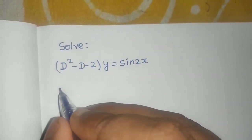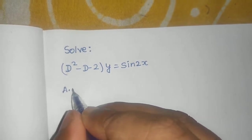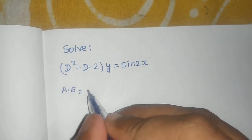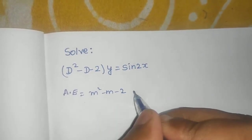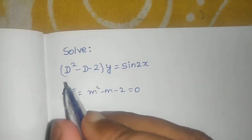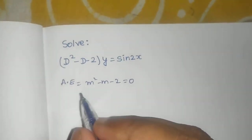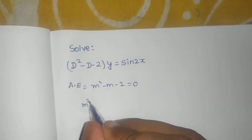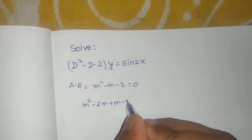For the complementary function, first we need the auxiliary equation. Our auxiliary equation is formed by replacing D with m from the left-hand side portion, giving us m² - m - 2 = 0.